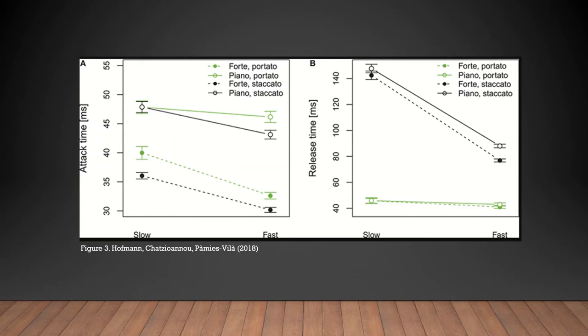Regarding the portato articulation, a two-way ANOVA in graph A of Figure 3 shows a significant influence of dynamics on attack time. For this comparison, P is less than 0.001, which also indicates a high F factor, and an Eta squared measurement of 0.82. A significant magnitude of effect would be Eta squared equaling 0.26 or higher. So with a measurement of 0.82, that means portato attack time is heavily influenced by dynamics. As you can see in graph A on the left, when doing a forte portato articulation, the attack time is about 40 milliseconds, compared to a portato articulation at a piano dynamic is 47 milliseconds.